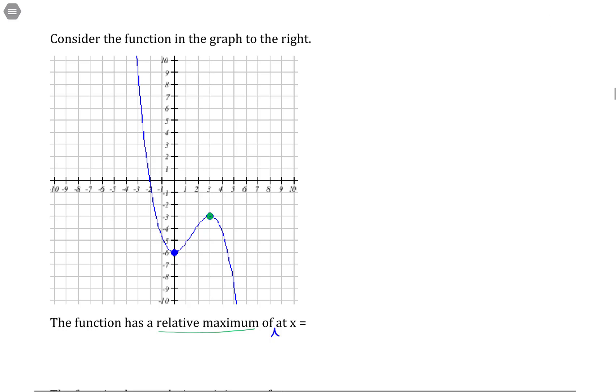So we have a relative maximum of y equals negative 3 at x equals 3. I'm just using the coordinates of that point because this is x equals 3, y equals negative 3. So the relative maximum itself is the y value. The location is the x.